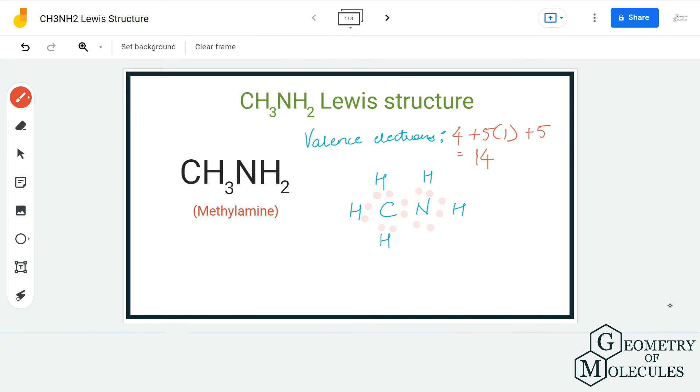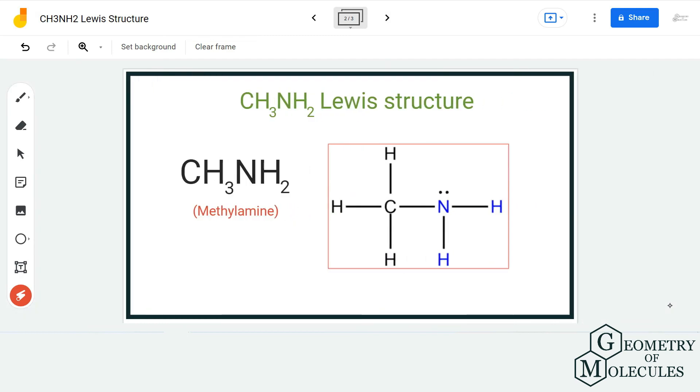Now if you look at this structure, all the atoms have complete outer shells because hydrogen atom has two valence electrons in its outer shell, carbon has a complete octet, and even nitrogen has a complete octet. Hence, this is the Lewis structure for methylamine, and I hope this video helps you understand that.